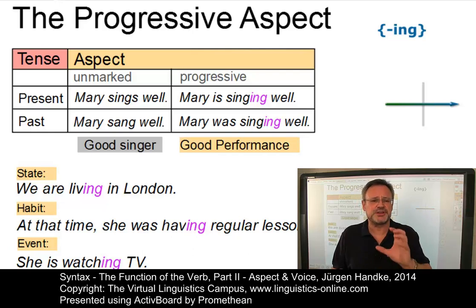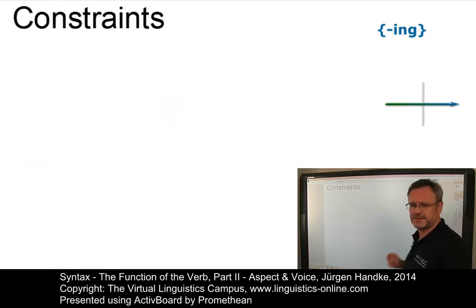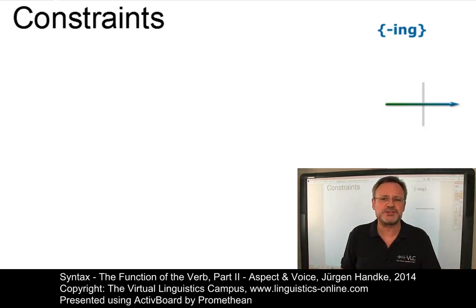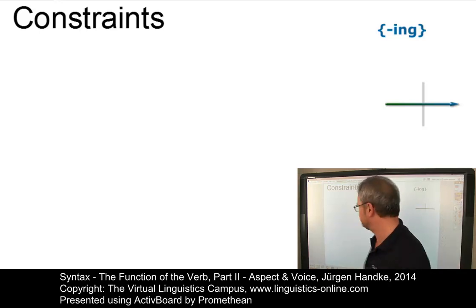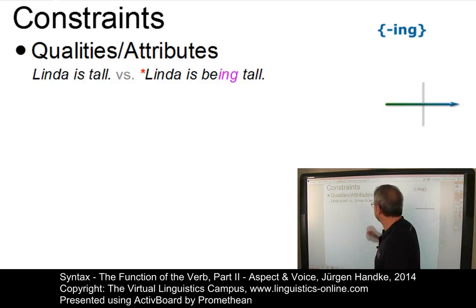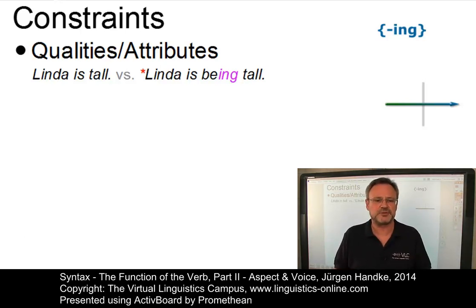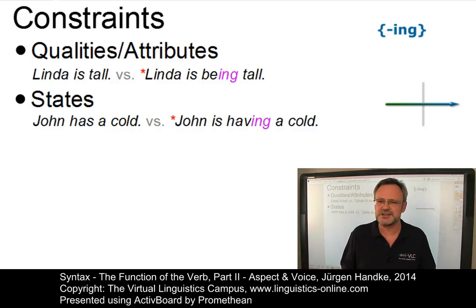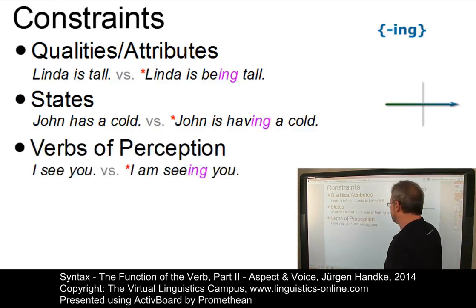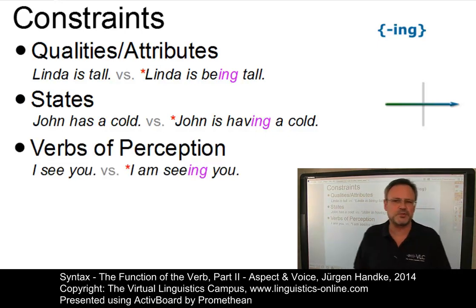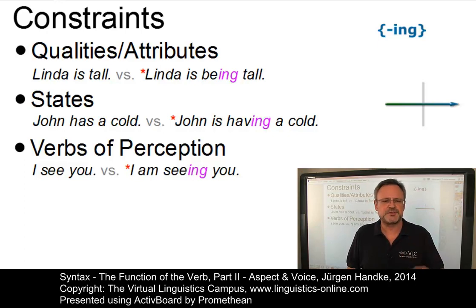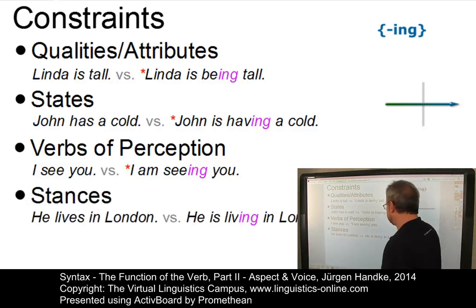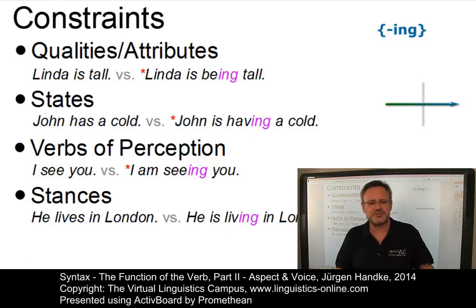Note that there are a number of constraints on the use of the progressive. The following contexts are normally excluded from the progressive aspect or result in meaning differences. For example, qualities or attributes: Linda is tall is alright, but Linda is being tall — the progressive aspect cannot be used. Or states: John has a cold versus John is having a cold — the progressive is simply impossible. Also, verbs of perception are problematic: I see you versus I am seeing you — normally we cannot use a progressive form of see. And stances: He lives in London versus he is living in London — the progressive does not result in ungrammatical structures, but the meaning is a different one.